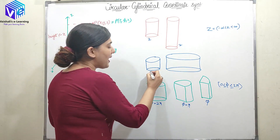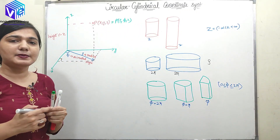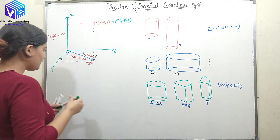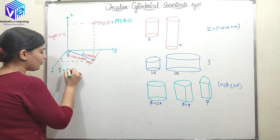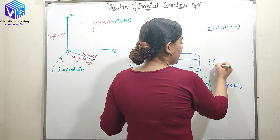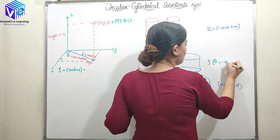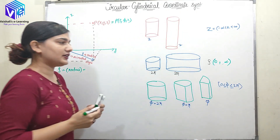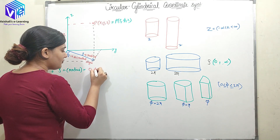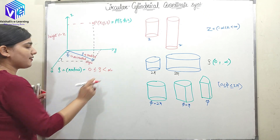Both have phi equal to 2π, but what is changing? Rho is changing. So we can completely represent every cylindrical object with the help of rho, phi, and z. Rho is the radius, and the radius can never be negative, so it ranges from 0 to infinity — positive infinity only. It is: 0 ≤ rho < ∞.